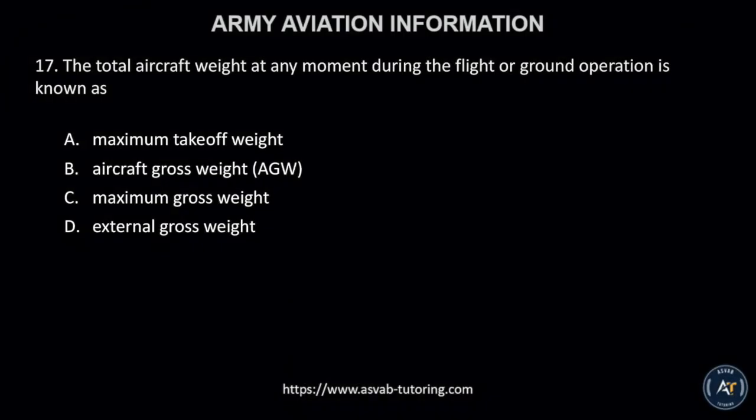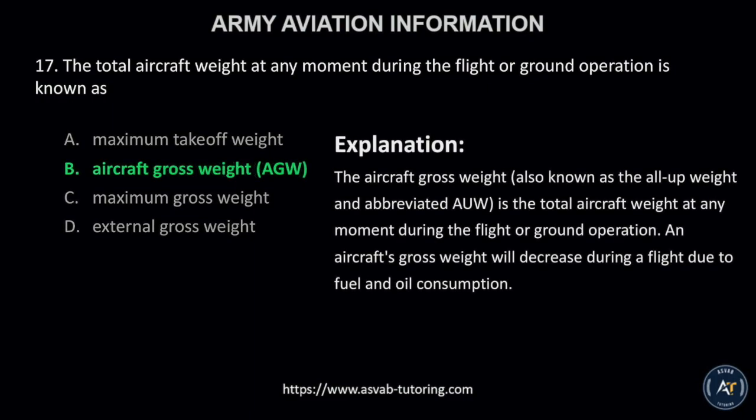Number 17. The total aircraft weight at any moment during the flight or ground operation is known as A, maximum takeoff weight; B, aircraft gross weight, AGW; C, maximum gross weight; or D, external gross weight? The correct answer is letter B, aircraft gross weight or AGW. The aircraft gross weight, also known as all-up weight and abbreviated AUW, is the total aircraft weight at any moment during the flight or ground operation. An aircraft's gross weight will decrease during a flight due to fuel and oil consumption.